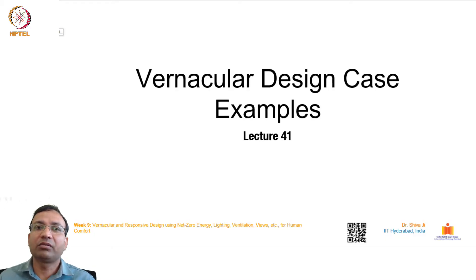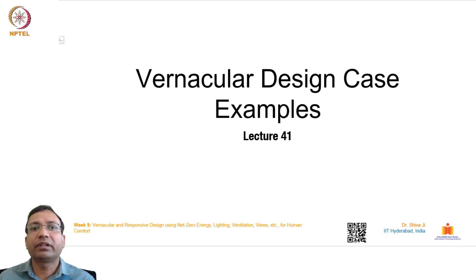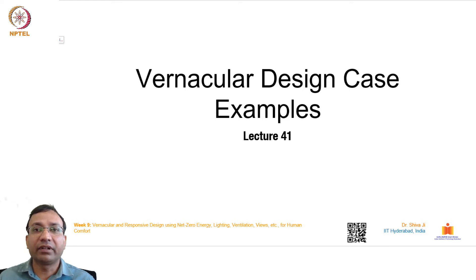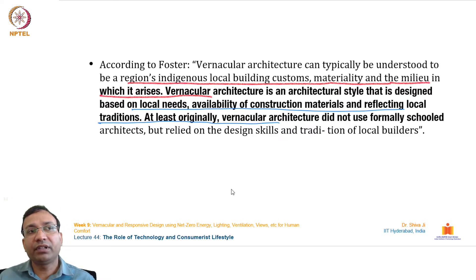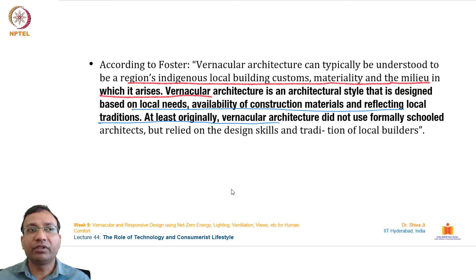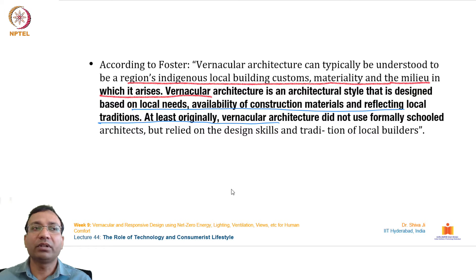In this lecture we will discuss vernacular case examples — how these designs have evolved over time and how they address climate-related responses for a habitation unit in different geographical and climatic locations. According to the definition, vernacular architecture can be understood as a region's indigenous local building customs, materials, and the milieu in which it arises — an architectural style designed based on local needs and availability of construction materials, reflecting local traditions.